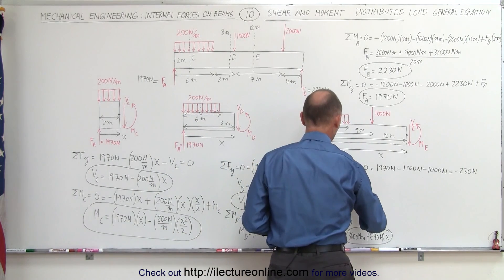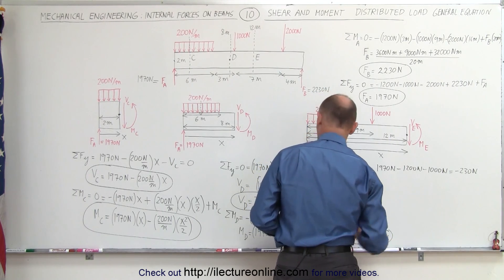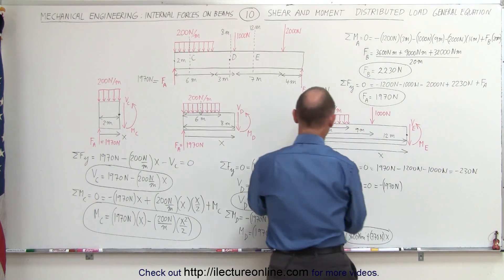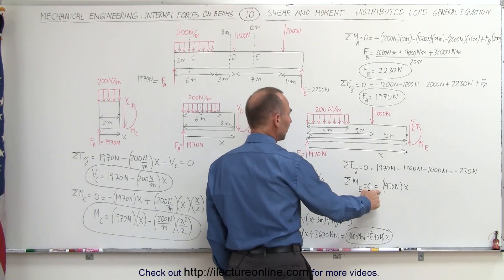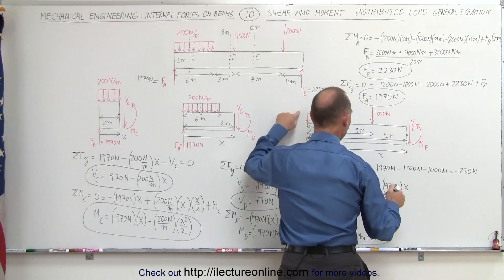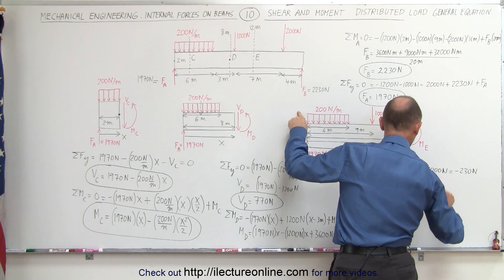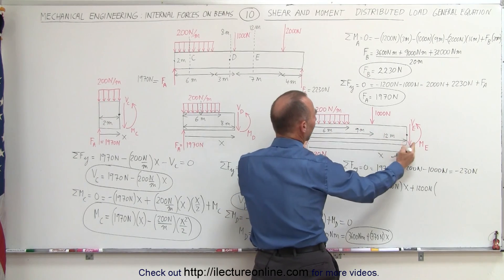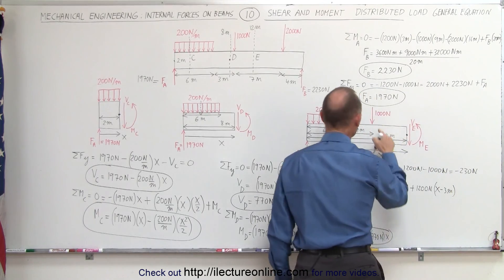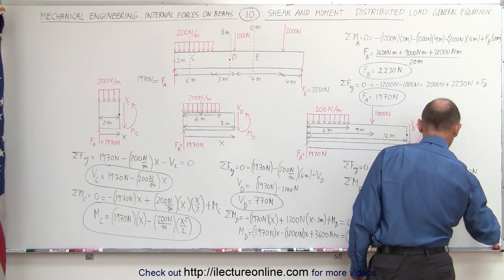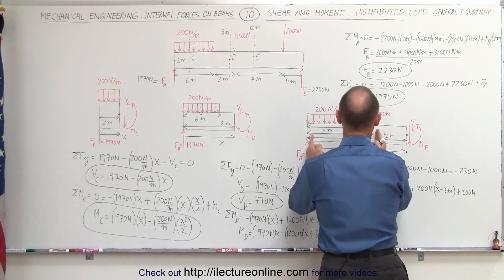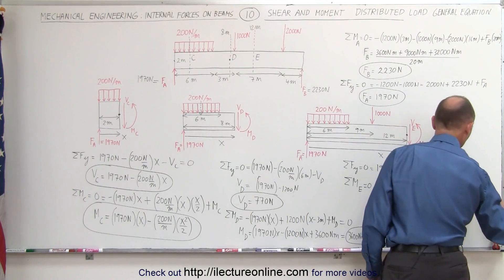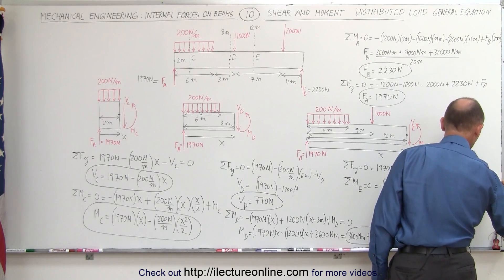Next we find the moment: the sum of moments about point E equals 0. The first moment is caused by the reaction force at A, which is minus 1,970 N times the distance x. Then we add plus 1,200 N times the moment arm x minus 3 meters, since the distributed force acts at its average distance of 3 meters. Then we include the 1,000 N point load times x minus 9 meters, and finally add M sub E.